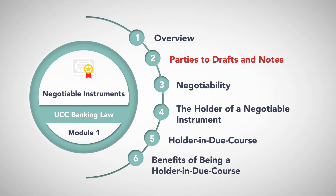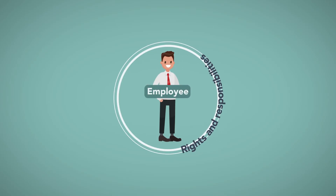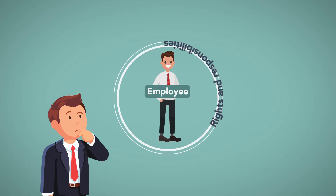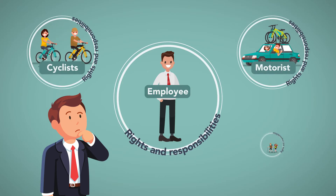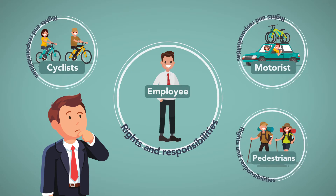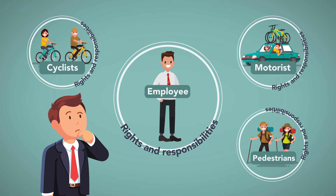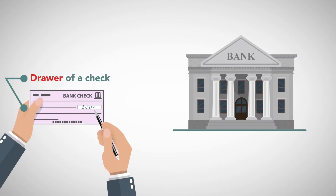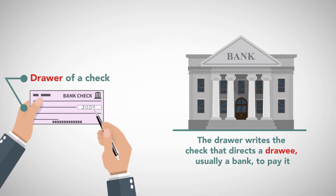Parties to drafts and notes. In law, there are many designations people can have at any given time, and a person's designation may define her rights and responsibilities. For example, a motorist has a set of rights and responsibilities when operating a motor vehicle, which are separate from the rights and responsibilities of pedestrians and cyclists. In commercial payments, a person may be a drawer of a check. The drawer writes the check that directs a drawee, usually a bank, to pay it.